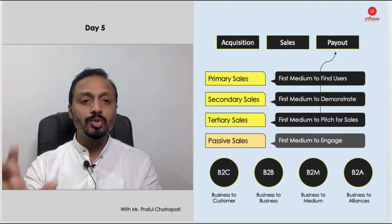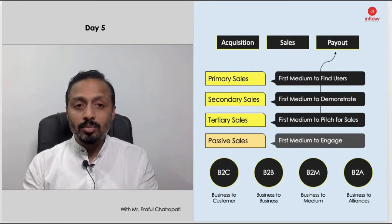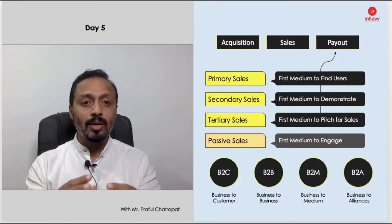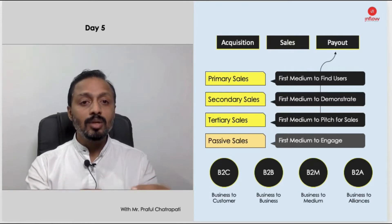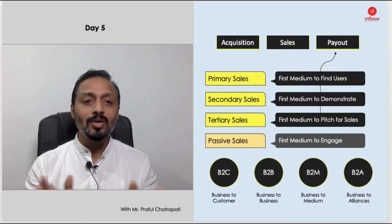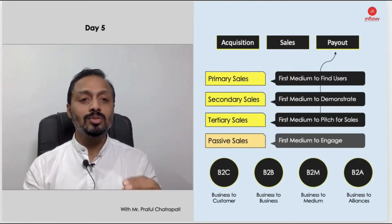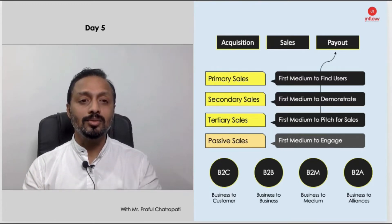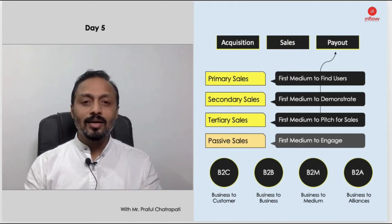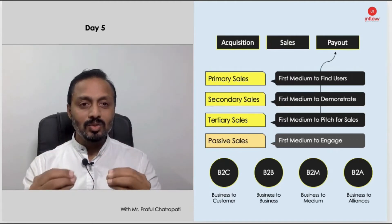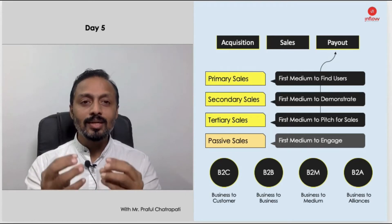Second is B2B, where you know you may not be directly able to reach your customers, so you find your partners. Third is business to medium — you need to find the channel from where you can really reach your user. And B2A, that is business to association — what kind of association or collaboration you can do.